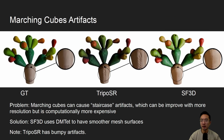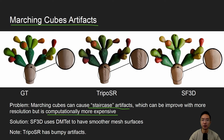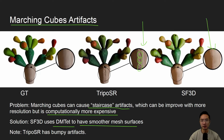Another problem is marching cube artifacts. Marching cubes can cause staircase artifacts, which can be improved with more resolution, but increasing resolution adds more expensive computation. The solution SF3D uses is a model called DMTET, which smooths out mesh surfaces. You can see TripOSR has bumps from marching cube artifacts, but with SF3D the surface is very smooth.